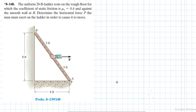Welcome to this screencast. The problem reads: a uniform 20-pound ladder rests on the rough floor, for which the coefficient of static friction is μs = 0.4, and against the smooth wall at B. Determine the horizontal force P the man must exert on the ladder in order to cause it to move. This problem comes from Engineering Mechanics: Statics, 13th edition by RC Hibbeler.